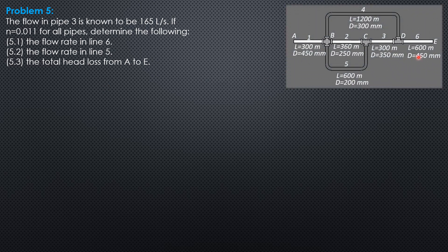So this is the situation. We have given discharge in pipe 3 as 165 liters per second. From here, we can compute the head loss of pipe 3. Then pipes 2 and 5 are parallel, so they have the same head loss, and we can relate the discharges of 2 and 5.